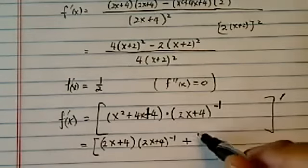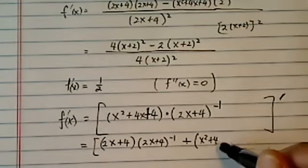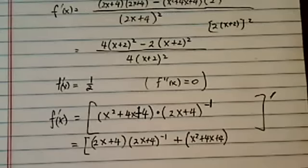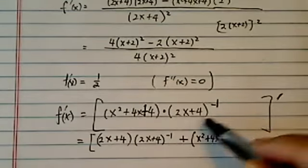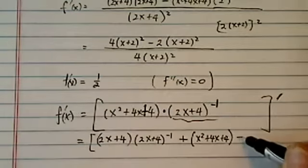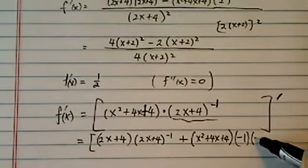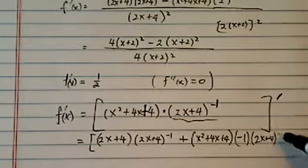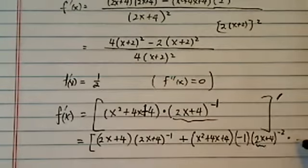Okay, now the second term is a little more cumbersome, but it's not difficult. Leave the first one alone. Take derivative of the second one. Derivative of the second one is a little messier. It's minus 1. We've got to get (2x plus 4) to the minus 2, and then times 2.